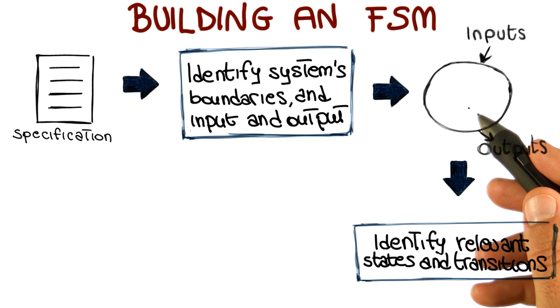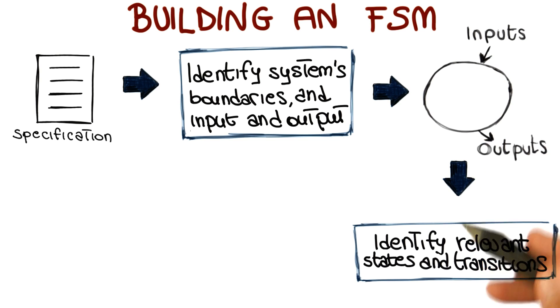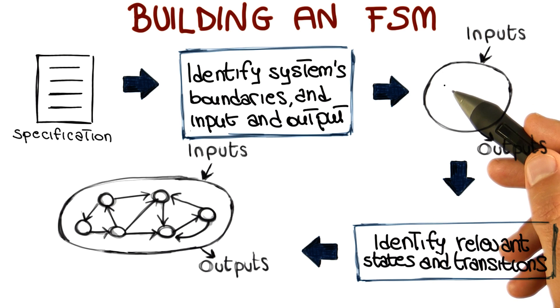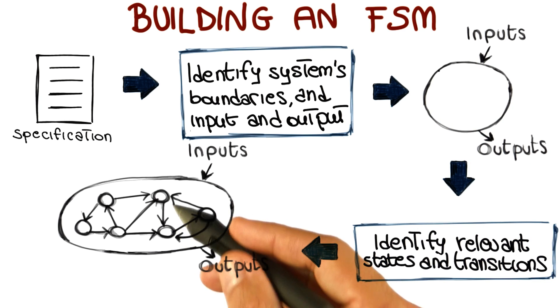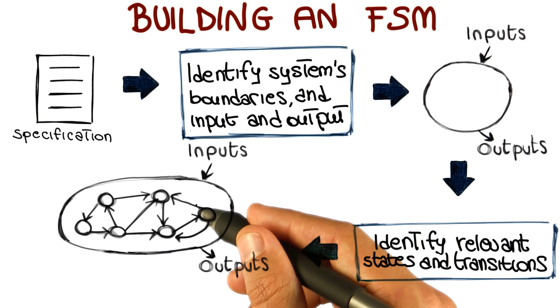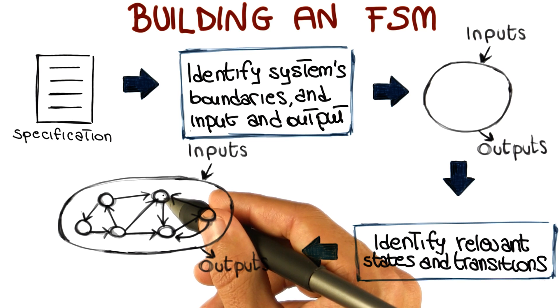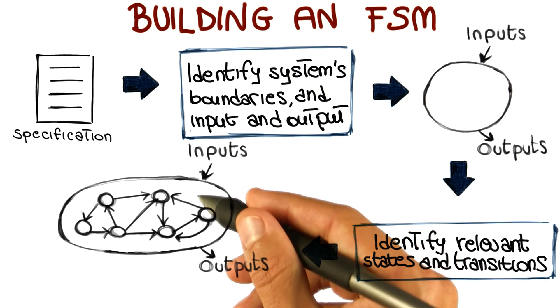Once we have done that, we can identify within the boundaries of the system, the relevant states and transitions. So we split this single state, we refine it into several states, and we also identify how the system can go from one state to another, including which inputs cause which transition, and which resulting outputs we can obtain.